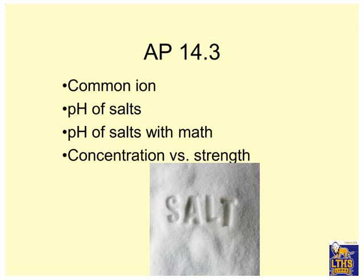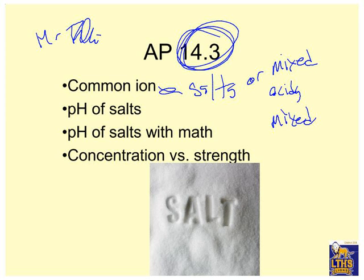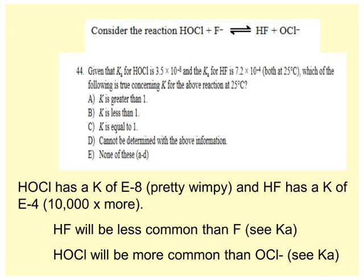Hi everybody. This is Mr. Polly, and welcome to AP Podcast 14.3, where we'll look at common ions, which really comes from salts or mixed acids or mixed bases. We're going to look at the pH of salts, so we're going to be able to predict whether they're acidic or basic qualitatively, no number, and then pH of salts with math, which would be quantitatively. And we're going to be able to look at concentration versus strength, which is quite simple. This common ion thing we've talked about in class a bunch, so I'm going to jump right over that and hop right into the pH of salts. Oh no, actually I'm not. I am doing one common ion thing, so let's start with that.